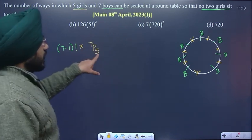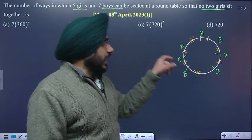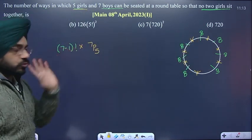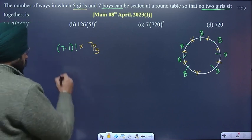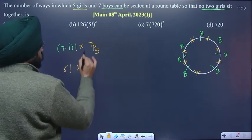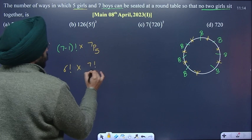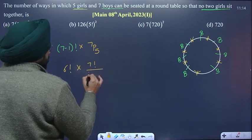You will write it as 6 factorial times 7P5. It means 7 factorial divided by (7 minus 5) factorial, which is 6! × 7!/2!.